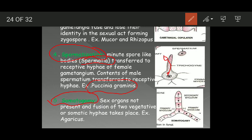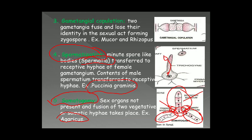Finally, somatogamy is the last mode of sexual reproduction. Here, sex organs are not present — they are not formed. The fusion of two somatic or vegetative hyphae takes place. Example is Agaricus. There are no sex organs, but fusion of nuclei takes place as a consequence of fusion of two different hyphae belonging to opposite strains (positive and negative). This results in the formation of a dikaryotic hypha, which divides and forms secondary or dikaryotic mycelium.